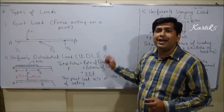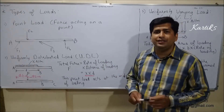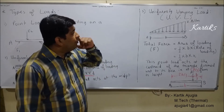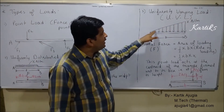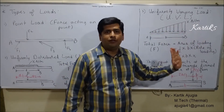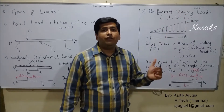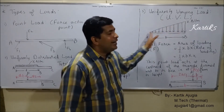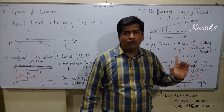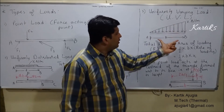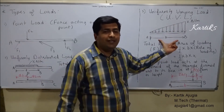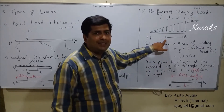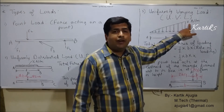Converting UDL into a point load and knowing where it acts is important for analyzing bodies in equilibrium. The third type of loading is the uniformly varying load (UVL). As the name suggests, the load increases at a uniform rate over the length of the body, forming a triangular shape. The rate of loading continuously increases — one bag, two bags, three bags — forming a triangle. The base of the triangle represents the length of loading B, and the maximum rate of loading is X Newton per meter.